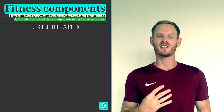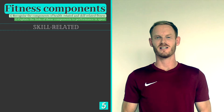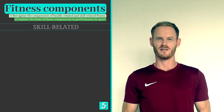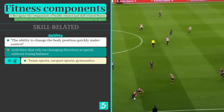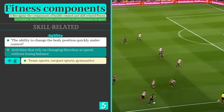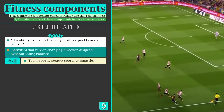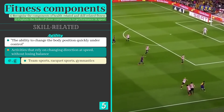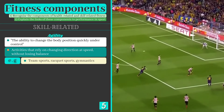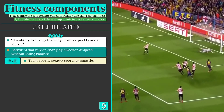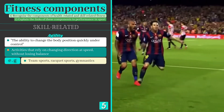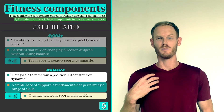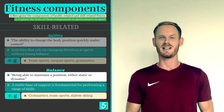Now we only need to cover the 4 skill related components of fitness and we will take a look at agility first. Agility is the ability to change the body position quickly under control and is important for physical activities that rely on changing direction at speed. Dribbling in football is a great example of agility in action, as players need to make quick directional changes to evade defenders whilst maintaining ball control throughout.